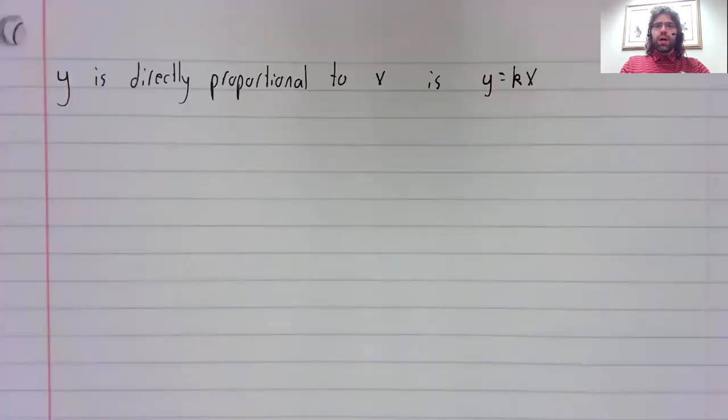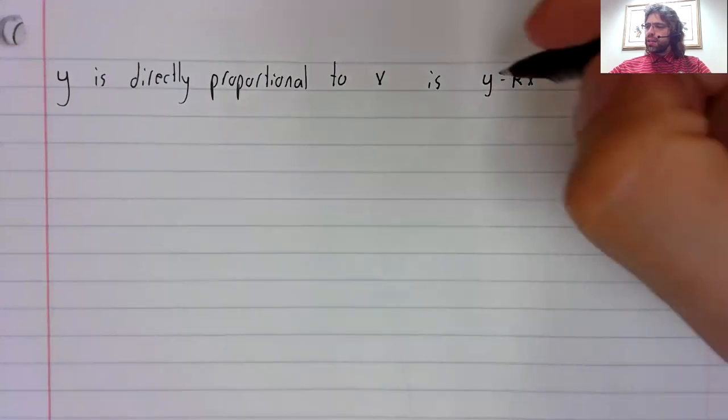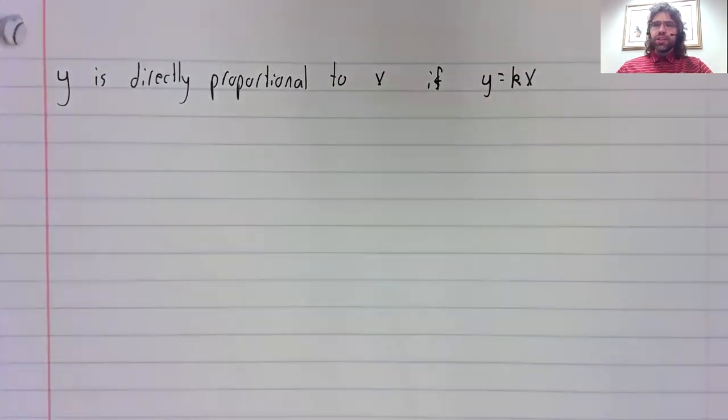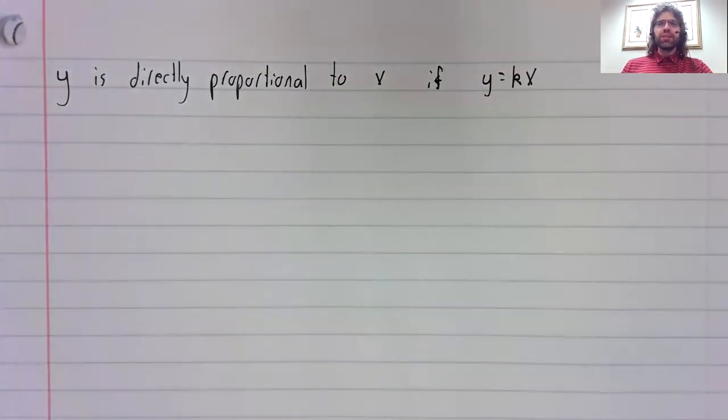Let's remind ourselves of what it means for one constant to be directly proportional to another. Y is directly proportional to x if y equals k times x for some positive constant k.